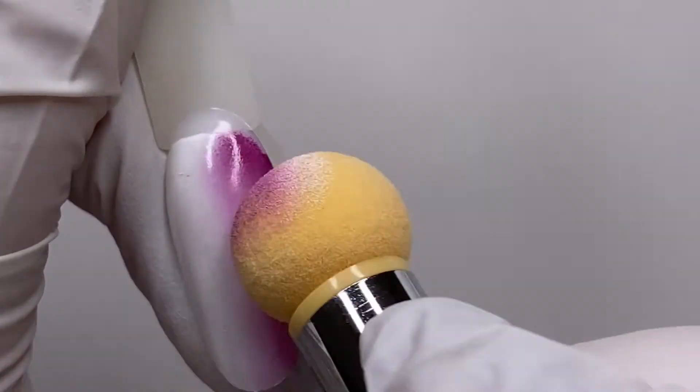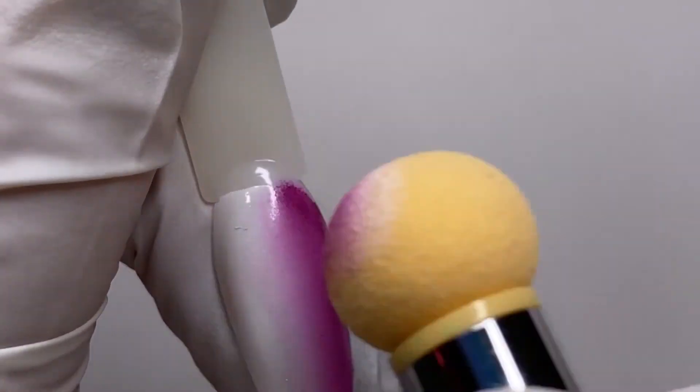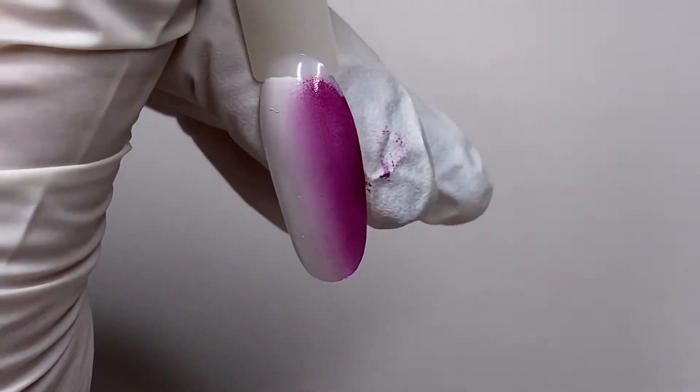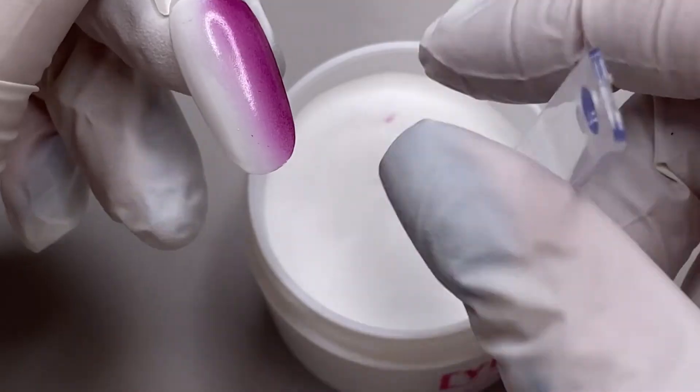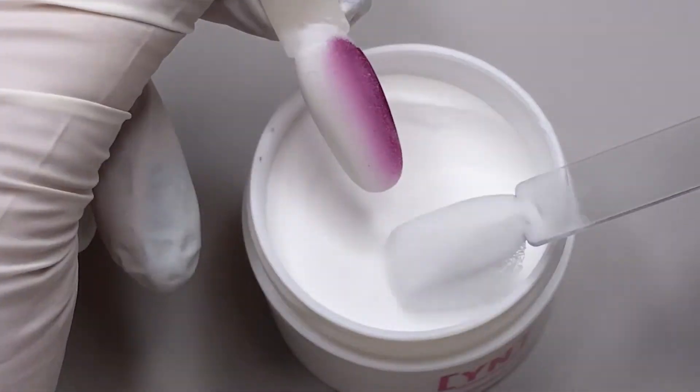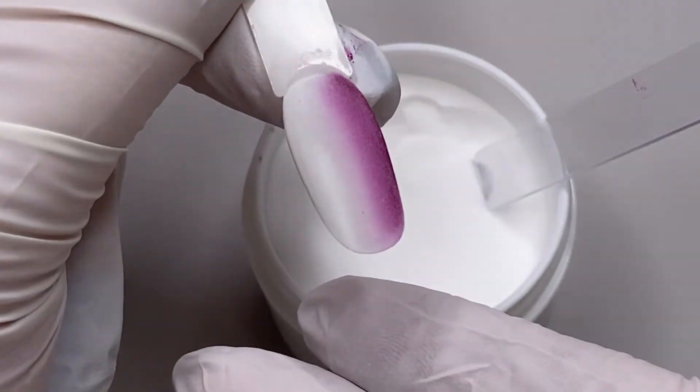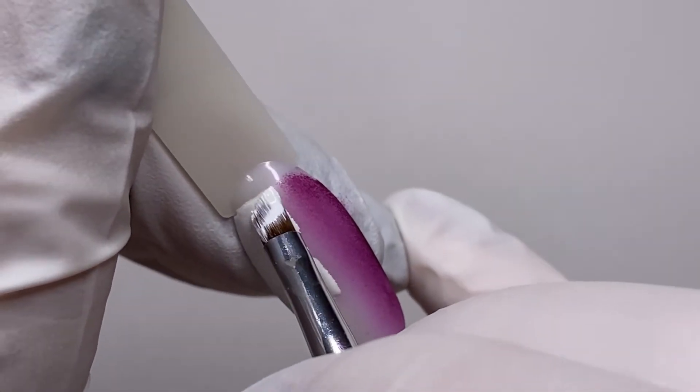Before I cure, I'm using clear acrylic powder. This will help me to achieve a smooth ombre the way we love it. So I'm applying acrylic powder, I cure on a lamp for one minute.